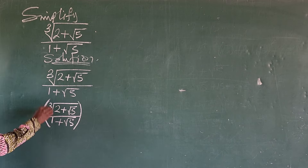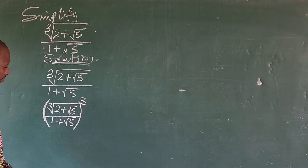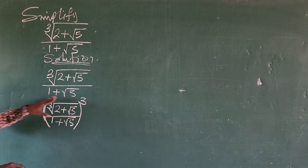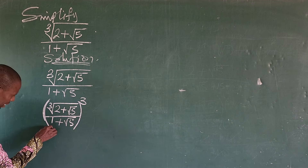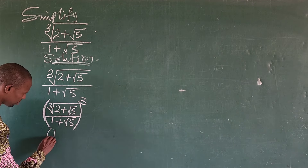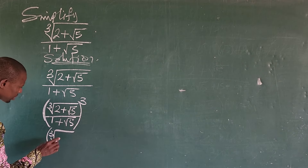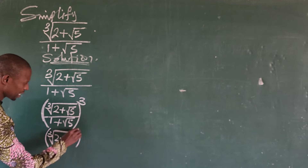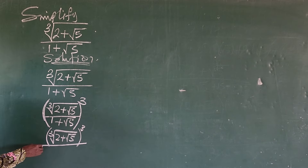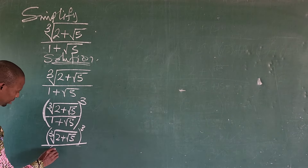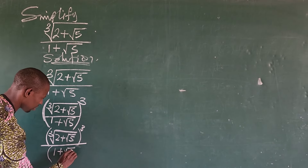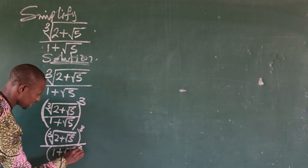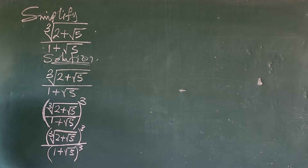This is covering everything. Then we put our cube here. We cannot distribute this cube among the quantity we have inside. So we can rewrite this as: the cube root of 2 plus the square root of 5, close bracket, all to the power of 3, all over bracket 1 plus the square root of 5, close bracket, all to the power of 3.